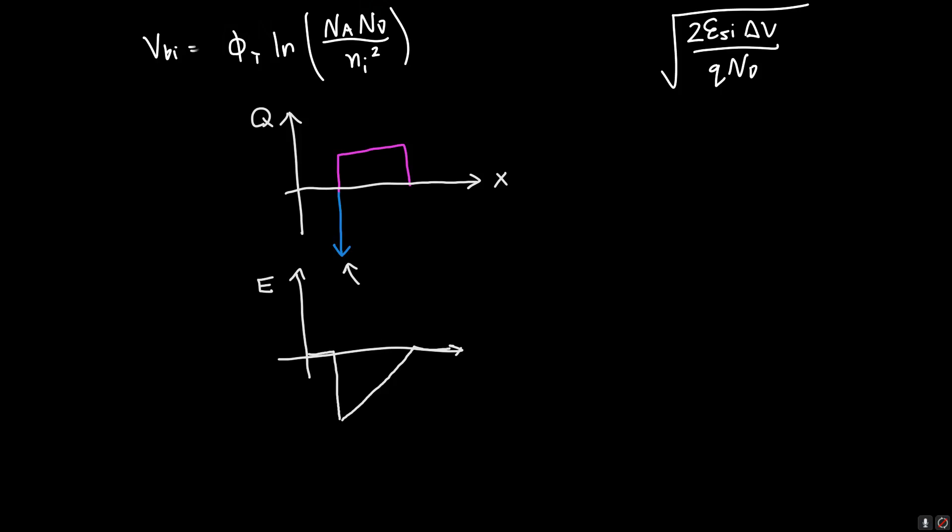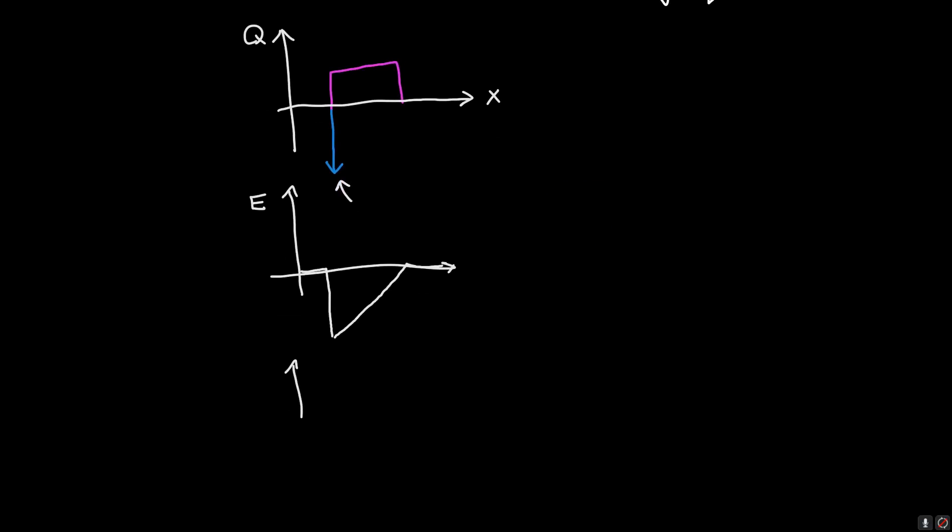When we go to find the voltage by integrating the electric field—recall that this all comes from Gauss's law: the divergence of E equals the charge density divided by epsilon—or in one dimension, the charge density divided by epsilon equals dE/dx. We can rearrange this and integrate and solve for the potential because we also know that E is just minus dV/dx in one dimension.